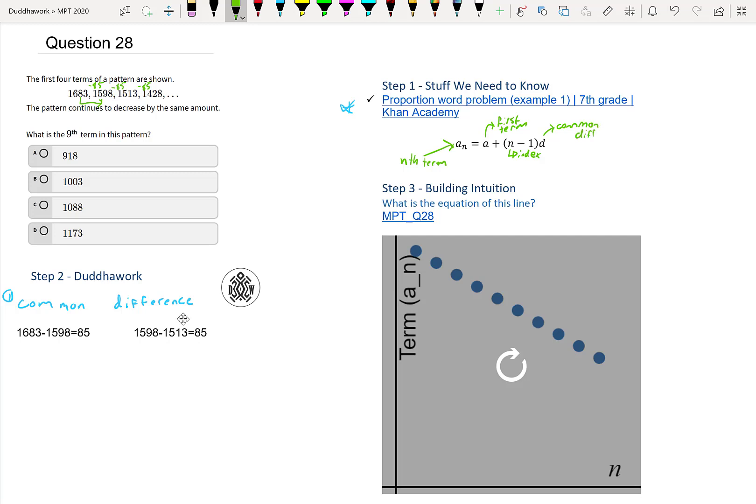So here for step one, we found that D was equal to negative 85 because you subtract 85. If it was positive, then it would be like, if we go up by 85 every time, then D would be 85. So let's try to understand where our formula comes from.